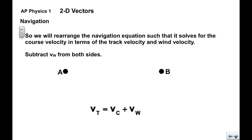So what we're going to do is rearrange it. We're going to rearrange this navigation equation so that it solves for the course velocity in terms of track and wind. We're going to subtract V sub W from both sides. We get a relationship that says course equals the track minus the wind. It says the same thing we had before but in a different order.